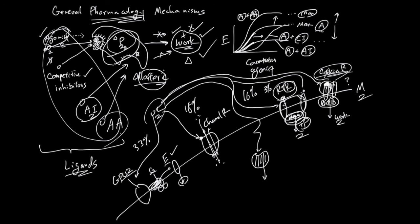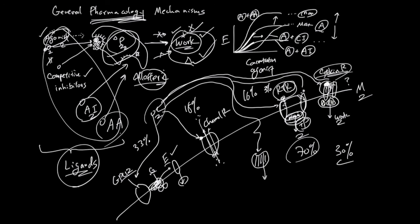If you add all these different percentages together, it's about 70%, and the remaining 30% use many other diverse mechanisms I won't cover here. So in general, pharmacology is about designing ligands to control cellular work, and depending on the target, different modes of activation exist.